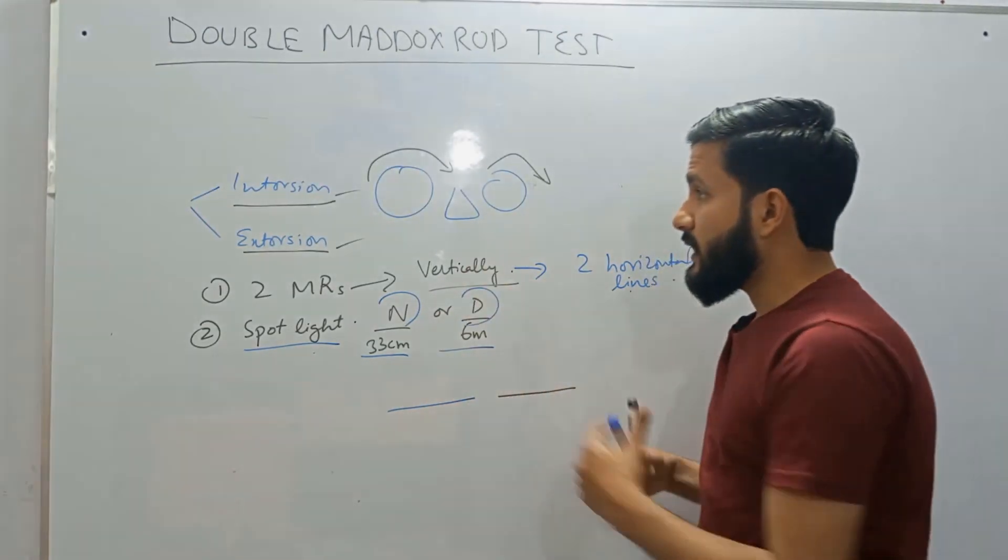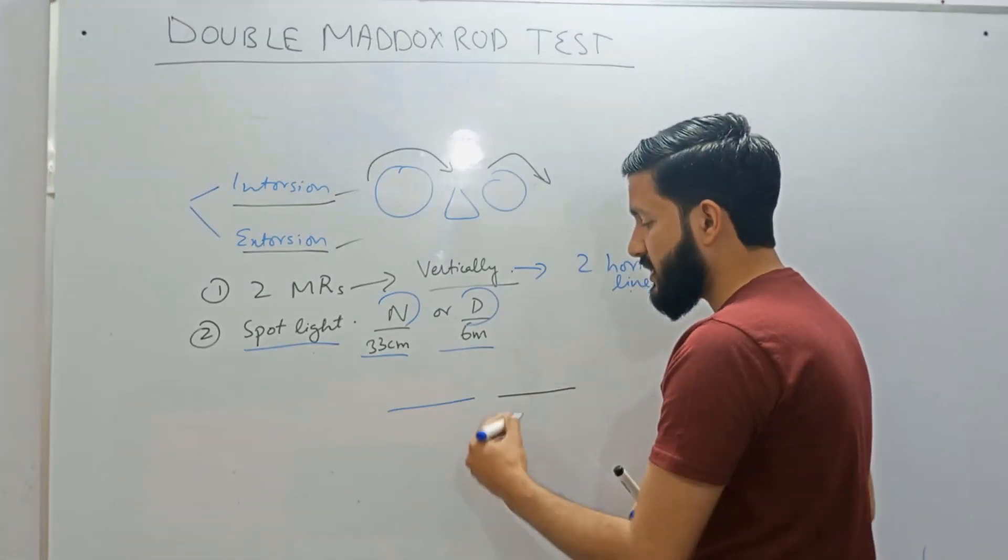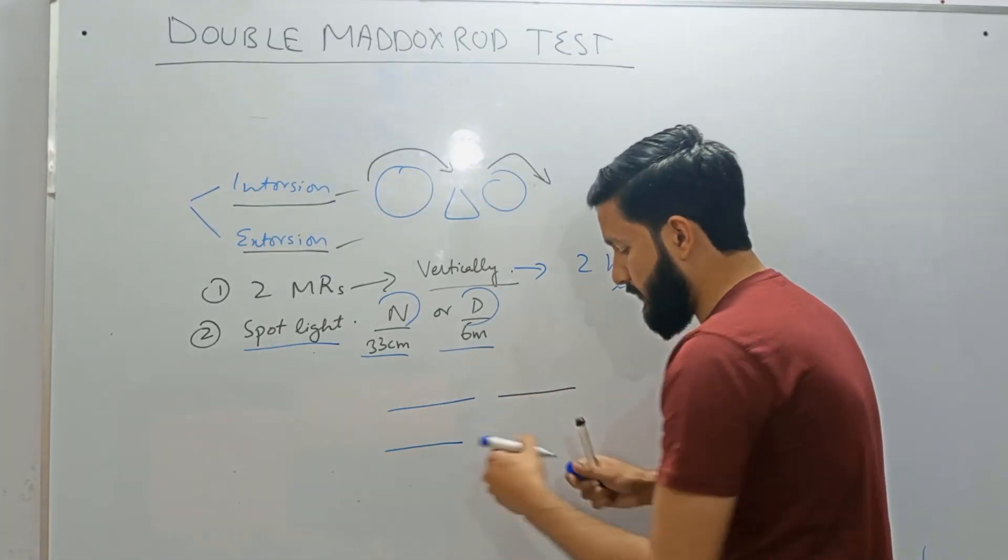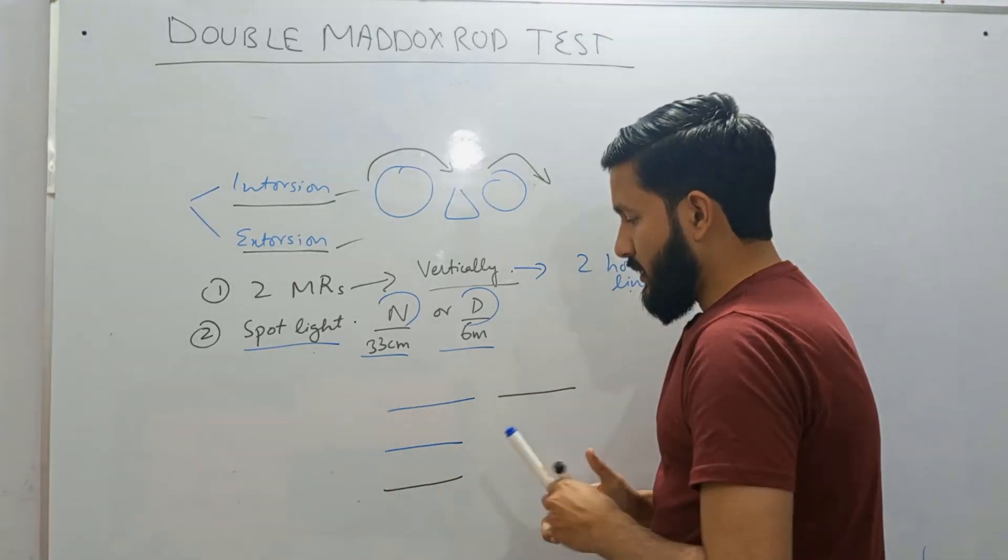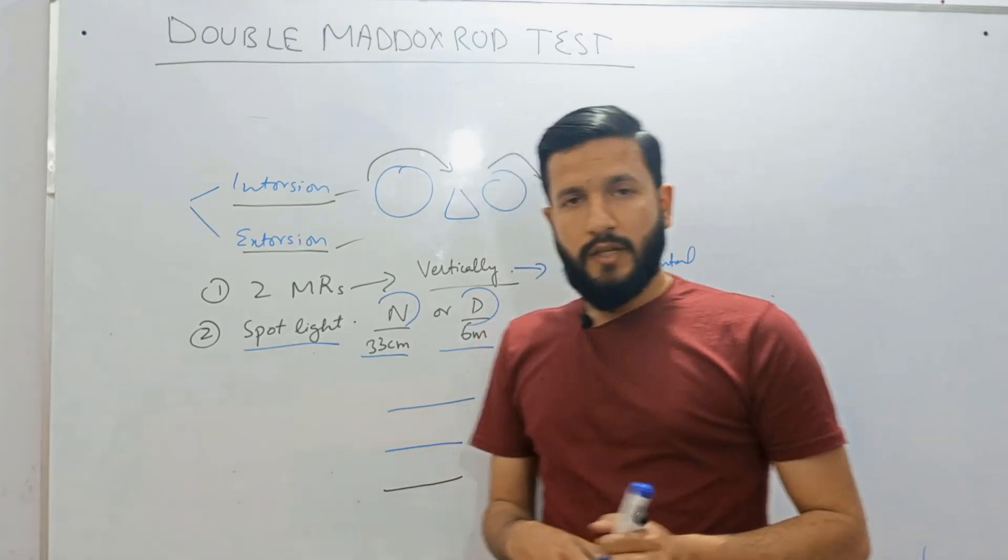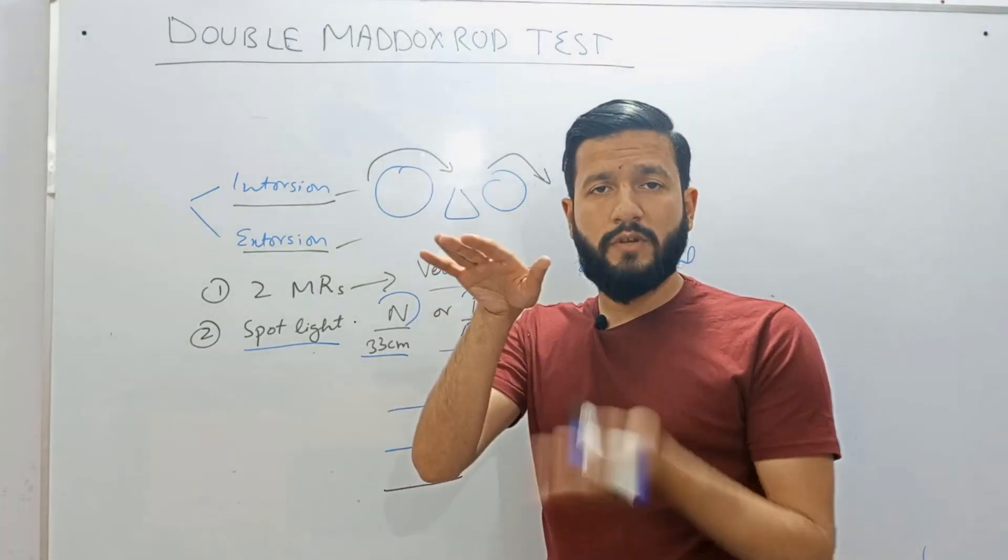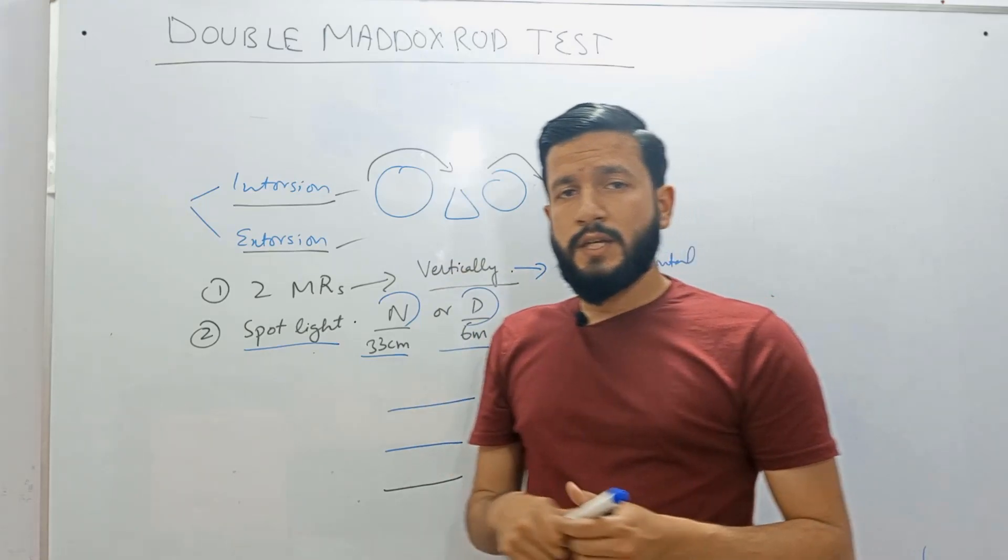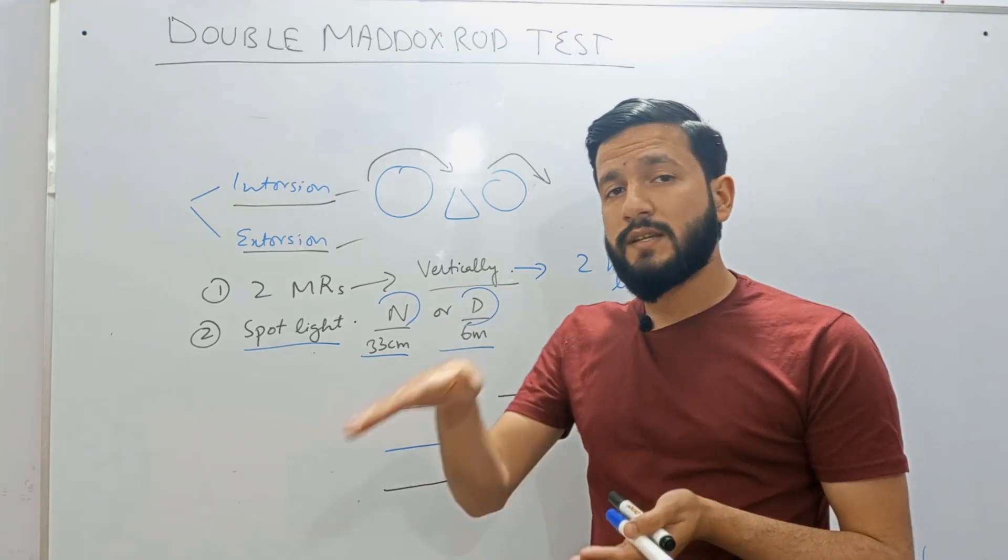In case of any vertical deviation the patient is supposed to be seeing these two lines as one above and one below. And if the patient reports that he sees two lines one above and one below then we will ask him to tell whether these lines are parallel or any one of the line is tilted.